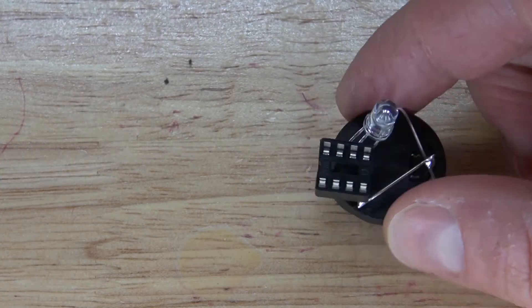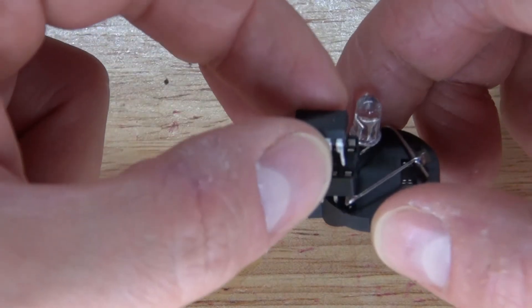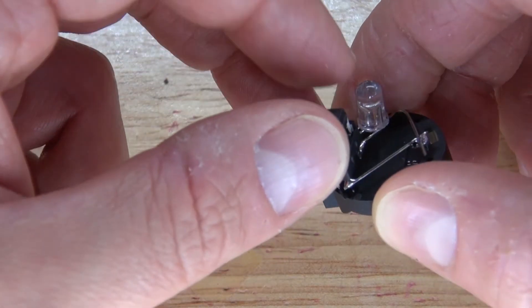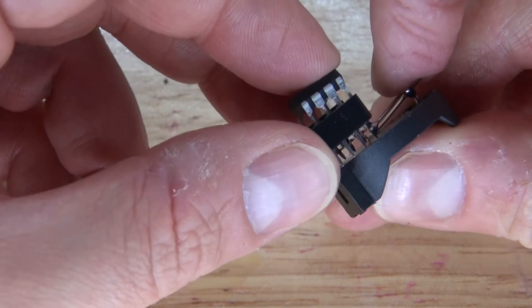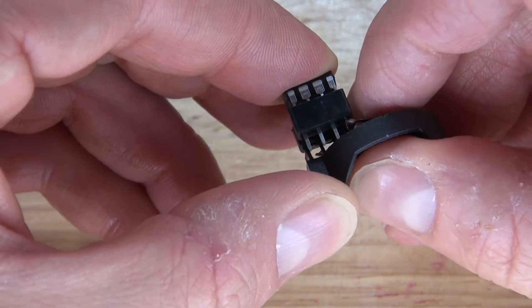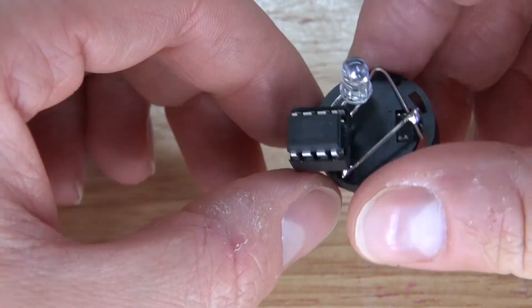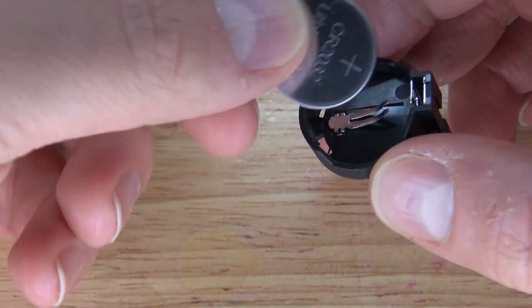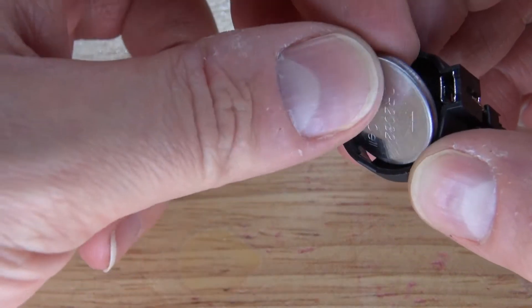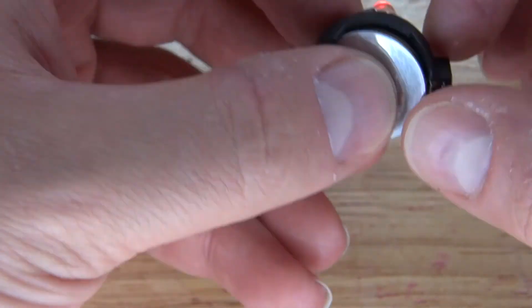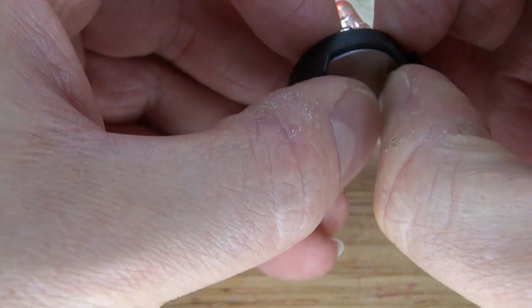And now finally connect the ATtiny85 microcontroller into the IC socket holder. And now take your 3 volt button cell battery and place it inside the holder. And there the circuit is now complete.